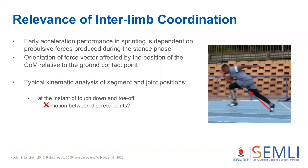Typically this is assessed in research and in coaching applications by analyzing the segment and joint positions at key instances such as touchdown and toe-off. The limitation of this approach is that a substantial amount of information about the motion of the athlete between those points is ignored.